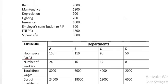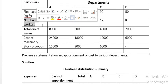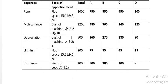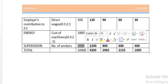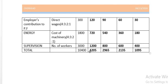Supervision of 3,000 is apportioned on the basis of number of workers, which are 24, 16, 12, and 8 for the four departments. Taking the ratios, supervision is distributed as: 1,200, 800, 600, and 400. Finally, the totals for all four departments A, B, C, D come to 4,205, 2,965, 2,135, and 1,095, with a grand total of 10,400.